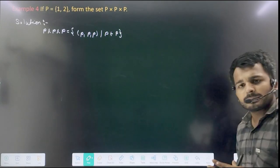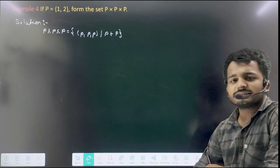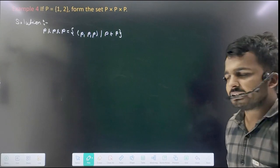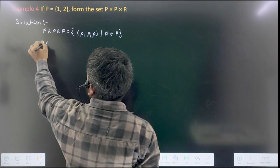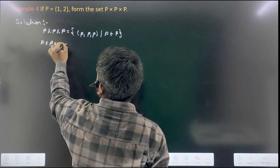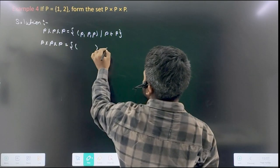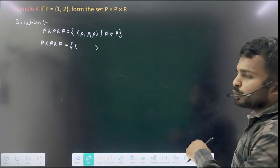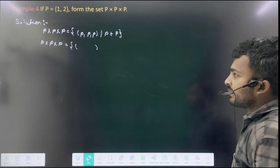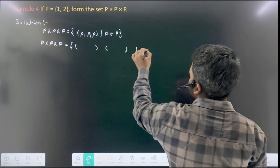This is the set of P, so you should know that there are 3. So how do we write this? You can see that P × P × P, how do we write this? You should know that how many elements will be made here: 2 × 2 × 2 = 8. So you should make 8 brackets, make the circuit first.